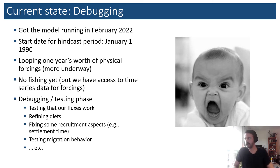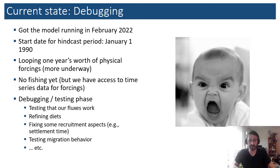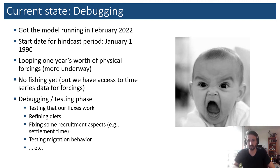Where we are right now is dealing with the angry toddler that this model is at this stage. We got it going in February, after about a year and a couple of months of development. The hindcast period starts on January 1st, 1990, and at the moment we have one year's worth of forcing files — we're doing the transformation for the rest of the 30-year ROMS hindcast. There's no fishing yet, but we have time series planned as forcing files for catch and removals. We're testing fluxes, polishing diets, fixing recruitment issues, and testing migration behavior.